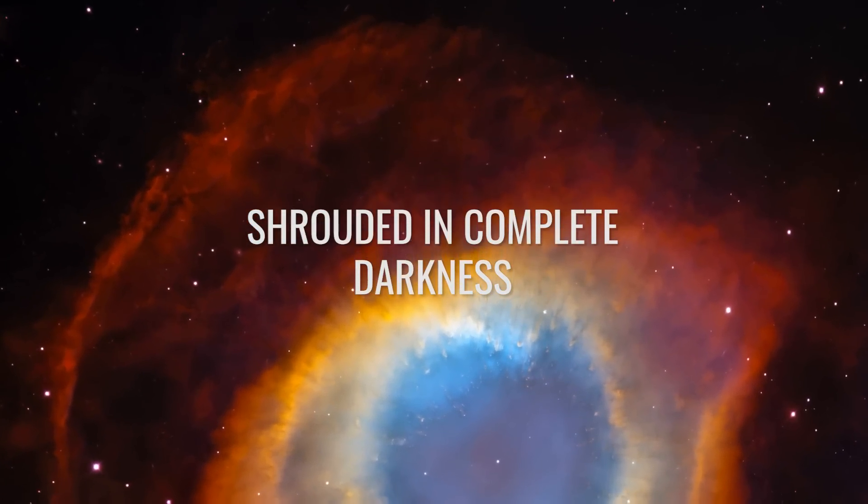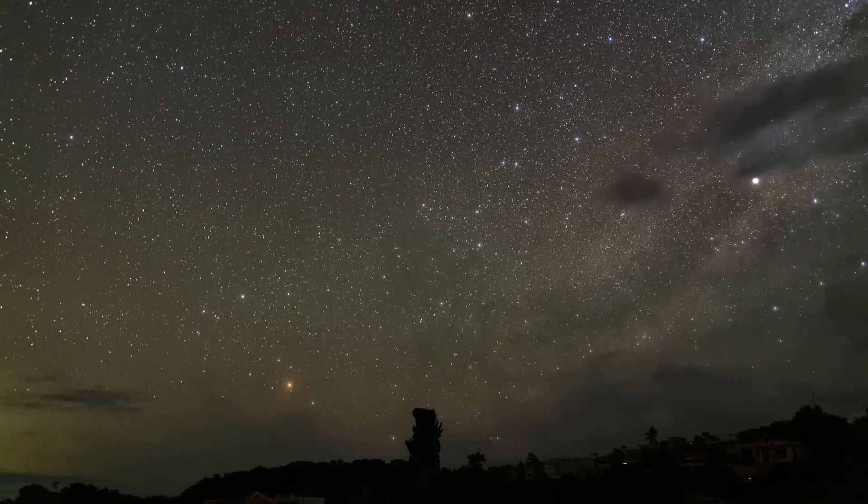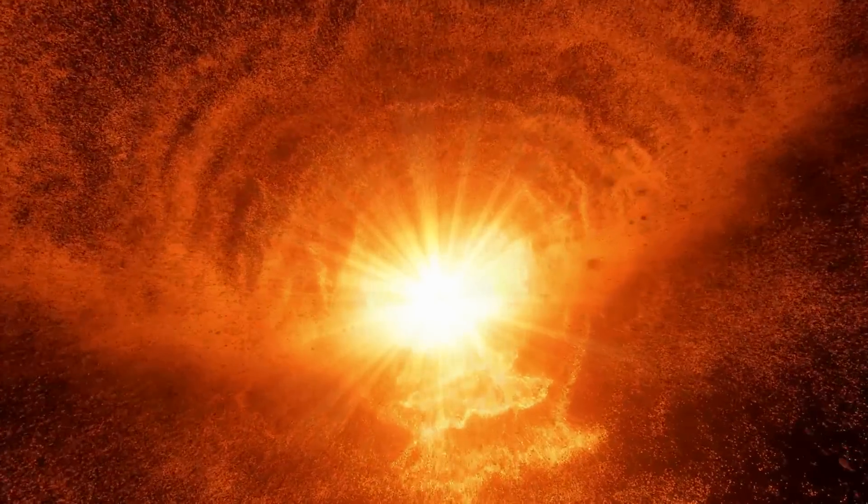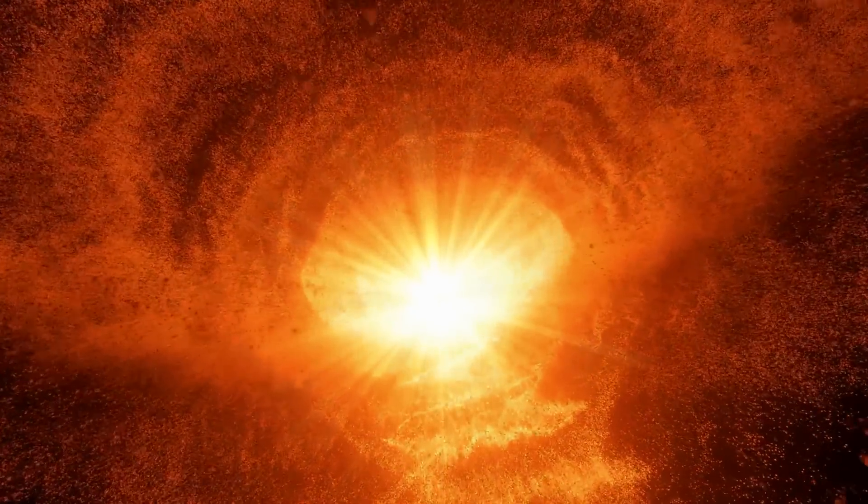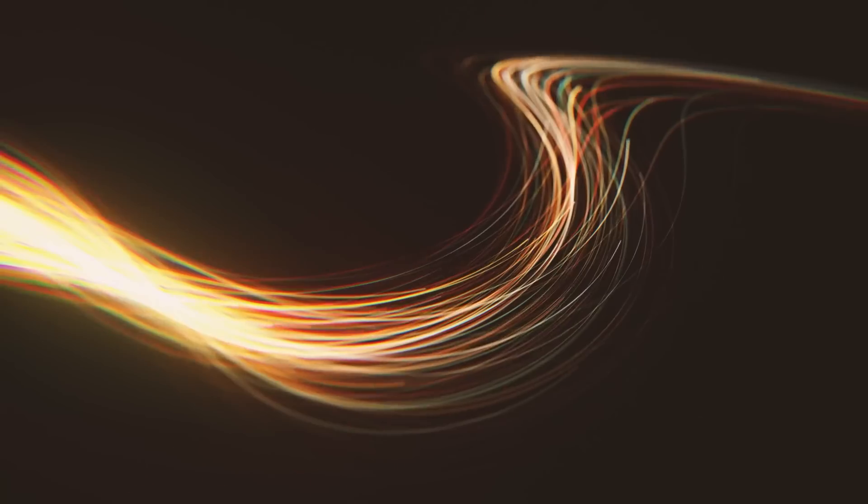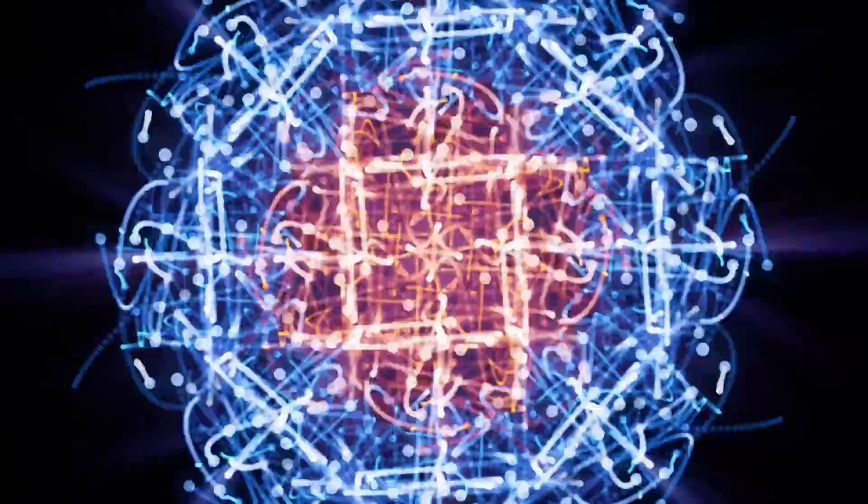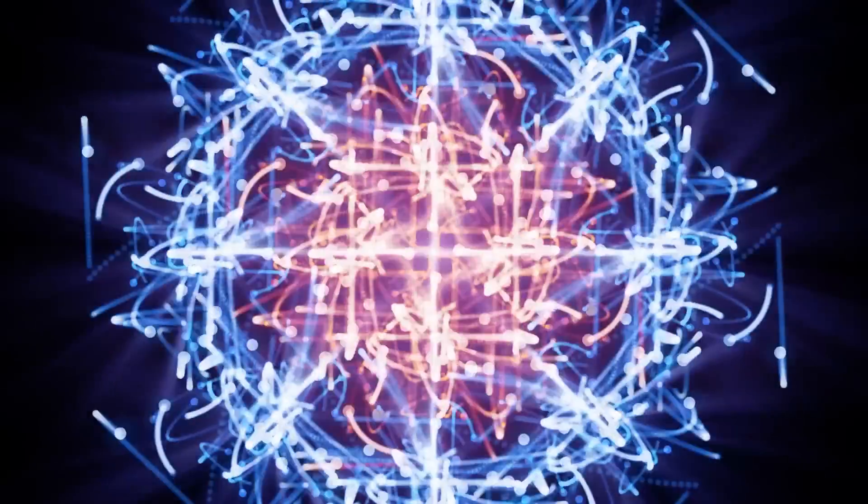Imagine the early universe shortly after the Big Bang. It is a hot, dense mixture of particles and radiation that is expanding rapidly. At this stage, there is still no light in the conventional sense, as photons, the particles of light, are constantly interacting with the dense, free protons and electrons and cannot travel freely through space.